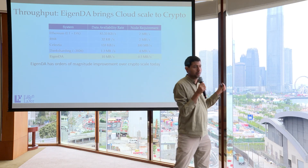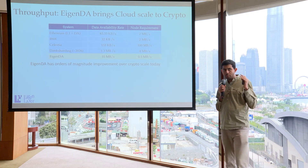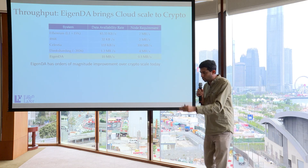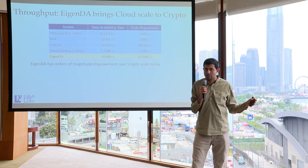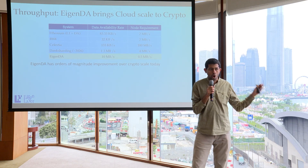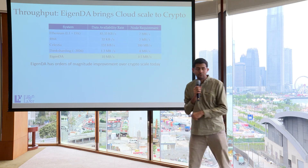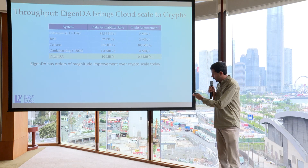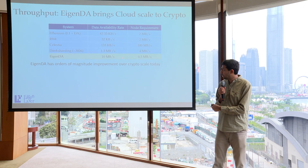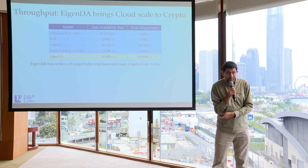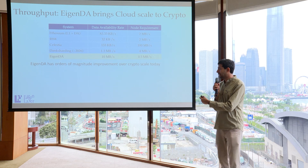There are two ways to think about rollups. One is to offload traffic from Ethereum to a rollup — that's not interesting to us. We want to onboard cloud to crypto. So EigenDA is building a data availability system with a data bandwidth today of 10 megabytes per second, which is much larger than anything out there.